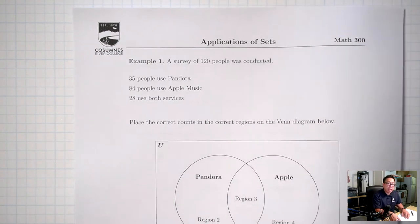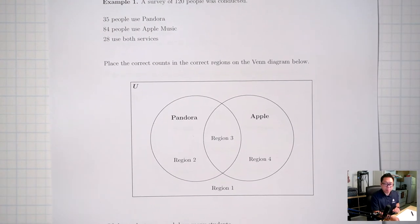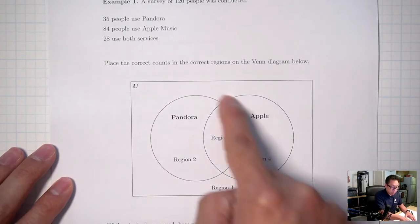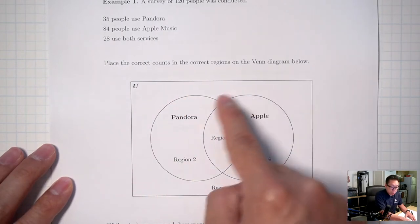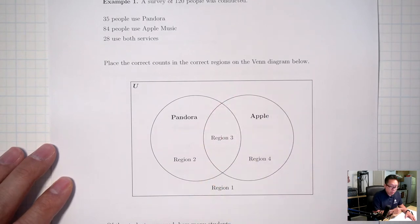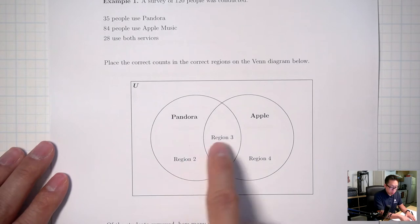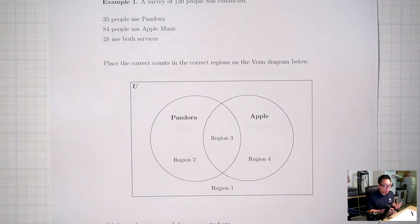What's going to help us answer these questions is this Venn diagram. In this Venn diagram, I have a circle for Pandora representing the people who use Pandora, and a circle for Apple representing the people who use Apple. I have four regions here: region 1, 2, 3, and 4. What I want to do is put numbers in each of these regions.